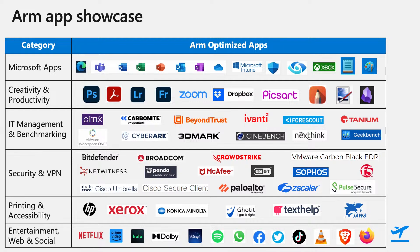Printing and accessibility is another key category. While most printers work fine with inbox drivers, HP, Xerox, and Konica have supported their existing universal print drivers as ARM native. In accessibility, JAWS, TextHelp, and GoQ are some of the accessibility apps that support ARM devices. In the Entertainment, Web, and Social category, media streaming applications like Netflix, Prime Video, Hulu, and Disney Plus run natively along with Spotify. Brave Browser and Mozilla Firefox, along with Microsoft Edge, run natively on ARM. For social apps, WhatsApp, Facebook, Twitter, and TikTok run natively on ARM devices.